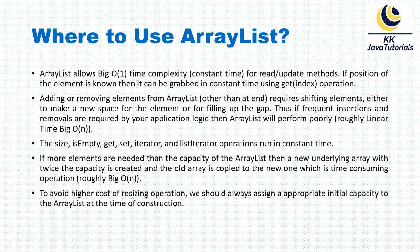Now, where to use or choose ArrayList. ArrayList allows O(1), or constant time complexity, for read and update operations. If the position of the element is known, it can be grabbed in constant time using the get method — you pass the index and directly get the element. So in that case you have constant time complexity, or O(1).